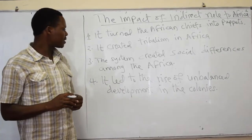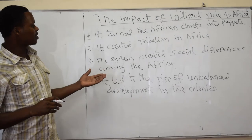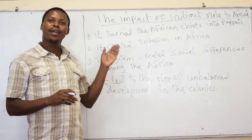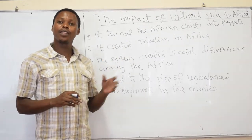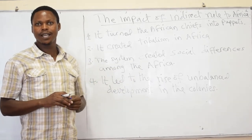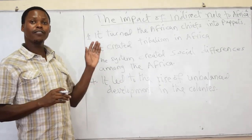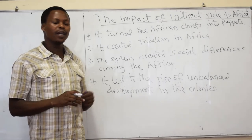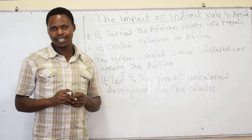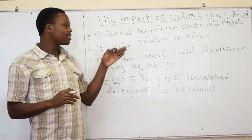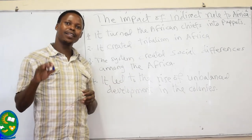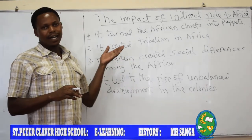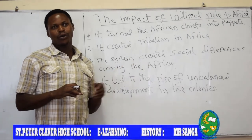Another impact was that the system created social differences among the Africans. Some African traditional rulers with their royal families felt that they were privileged and favoured over other societies by the colonial officers, and these situations led other Africans to remain under colonial domination.